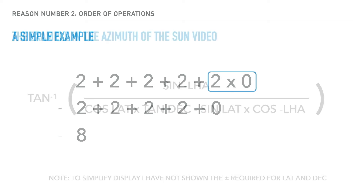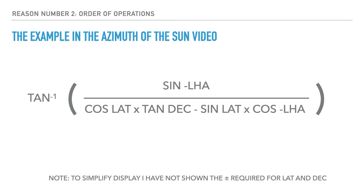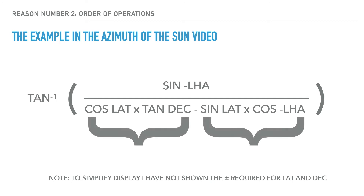Now let's look at our Azimuth formula, which is a bit more complicated than our simple example. How it is displayed is intended to show an easy-to-read format for humans, assuming you would apply BODMAS yourself and any unnecessary brackets required by your particular calculator. On the top of our fraction we have a single item — sine negative LHA — which is fine as it is. But on the bottom you'll note that we have two multiplications and an addition. The bottom portion is intended to have a bracket located around it. If you don't do this, your calculator following BODMAS will do sine negative LHA divided by cos lat, then multiply by tan dec, then subtract sine lat times cos negative LHA — giving you a completely wrong answer.